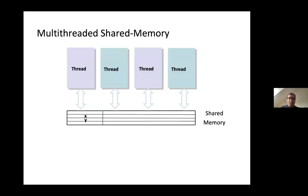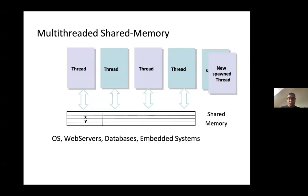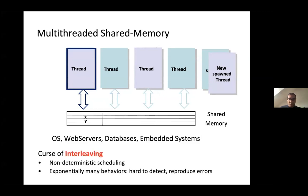There are multiple threads which are running and they communicate via finite shared memory. These kinds of programs are found all over the place: operating systems, web servers, databases, embedded systems, and so on. In a run, the first thread runs and gives up control, the second thread runs and spawns two new threads, and then control shifts. At every time instant, which thread is going to run is decided in a non-deterministic manner by some scheduler, leading to exponentially many different behaviors, which makes it very hard to detect and reproduce errors.